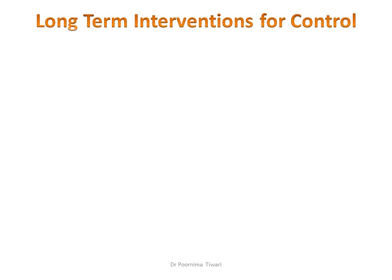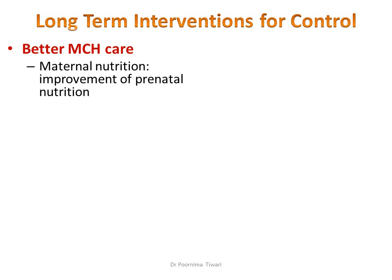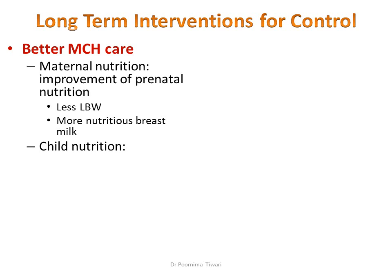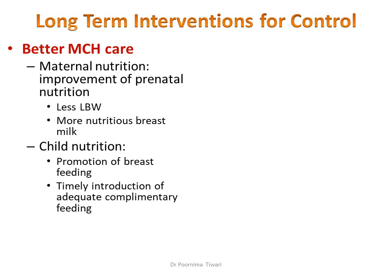Long-term interventions for control of diarrhea aim to reduce the incidence itself. These include better maternal and child health care: improving prenatal nutrition of the mother reduces the incidence of low birth weight, and a well-fed mother produces higher-quality, more nutritious breast milk. Other interventions include promotion of breastfeeding, timely introduction of complementary feeding in adequate quantity, Vitamin A supplementation, and immunization.